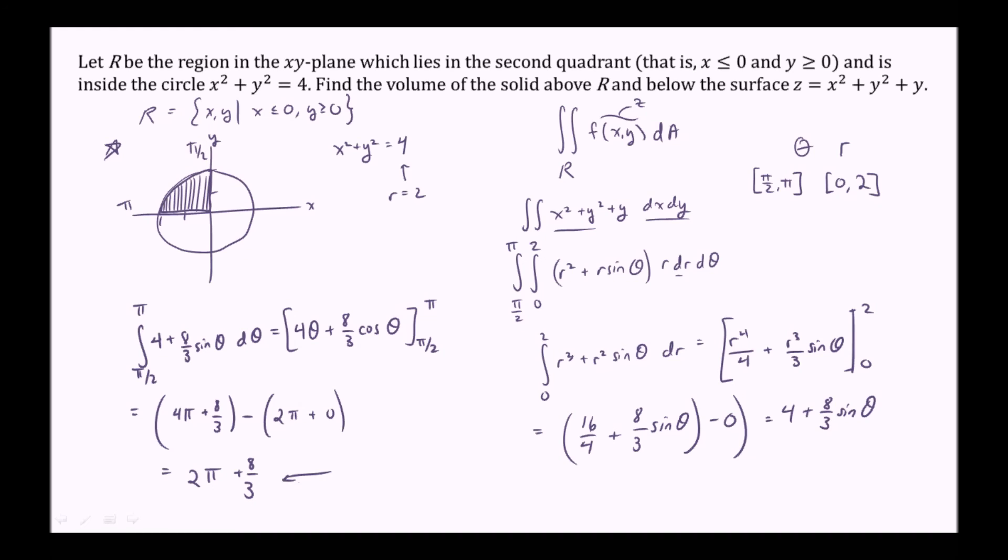And what does this represent? This is the volume of the solid above r. The region r we define as the second quadrant bounded by the circle x squared plus y squared equals 4, and below the three-dimensional surface x squared plus y squared plus y equals z.